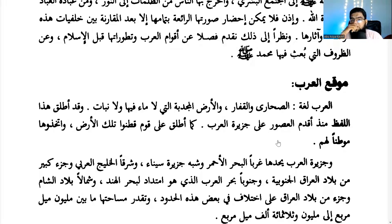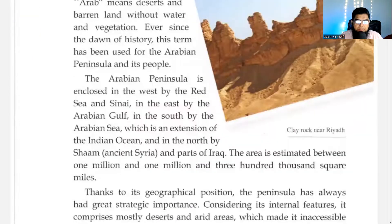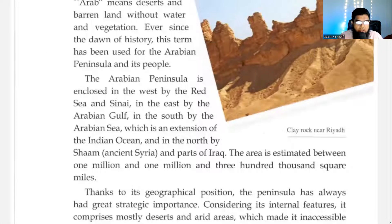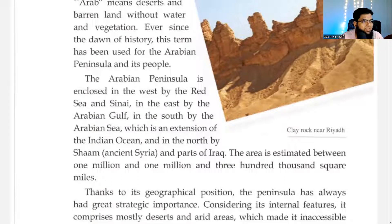So the word 'Arab' originally referred to the land, but soon it was transferred to the people who lived in that land — taking it as their homeland. Al-'Arabi is one Arab and al-'Arab is the Arabs collectively. Now he describes the Arabian Peninsula — Jazeera is technically 'island,' but here it means peninsula, which is a piece of land surrounded by water on three sides, not all four like an island.